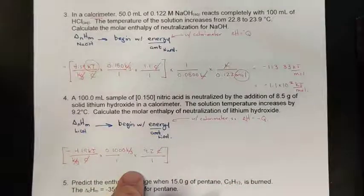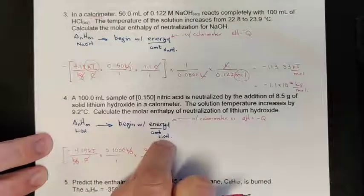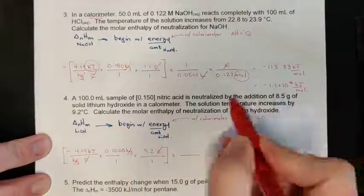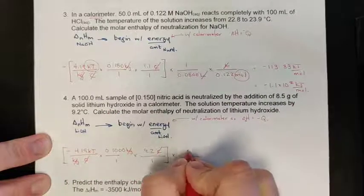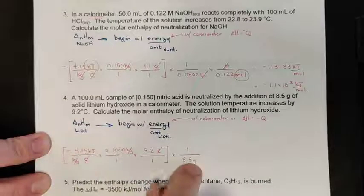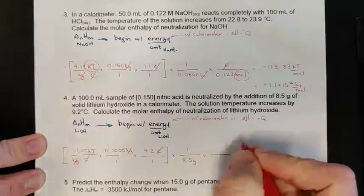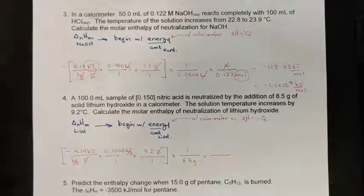Now I have energy, but I still need energy over the amount of LiOH. For that, I use the 8.5 gram addition of LiOH, placing it in the denominator. I now have kJ/g, but I need kJ/mol, so I have to convert grams to moles using the molar mass of lithium hydroxide.